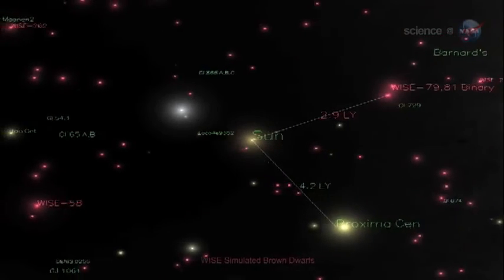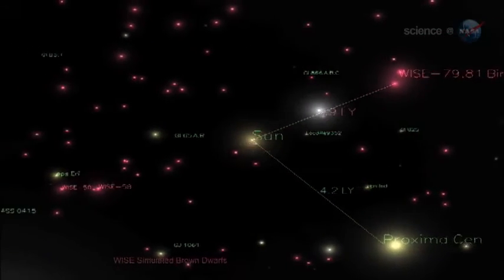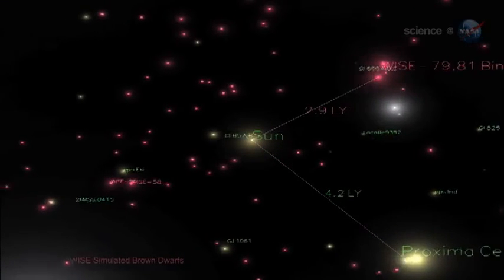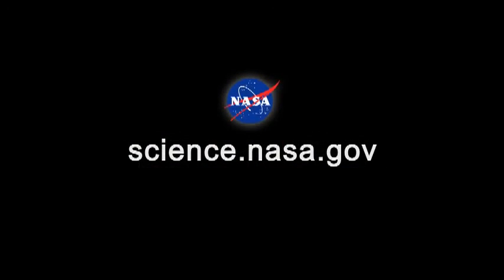With WISE, we may even find a brown dwarf closer to us than the closest known star, Proxima Centauri. Now that would be pretty cool news. For more information about stars, hot and cold, visit science.nasa.gov. I'll see you next time.